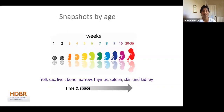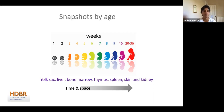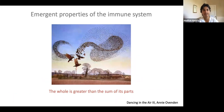So how do we actually understand the developing human immune system? You can't just label a cell and track it over time. What you can do is actually study multiple organs from one embryo or fetus and then integrate that information together. We've been very lucky to have the Human Developmental Biology Resource based both in Newcastle and UCL, which provides resource for researchers not just in the UK but also globally. This at-scale study from multiple organs has allowed us to understand the emergent properties of the immune system and see how the whole is greater than the sum of its parts.